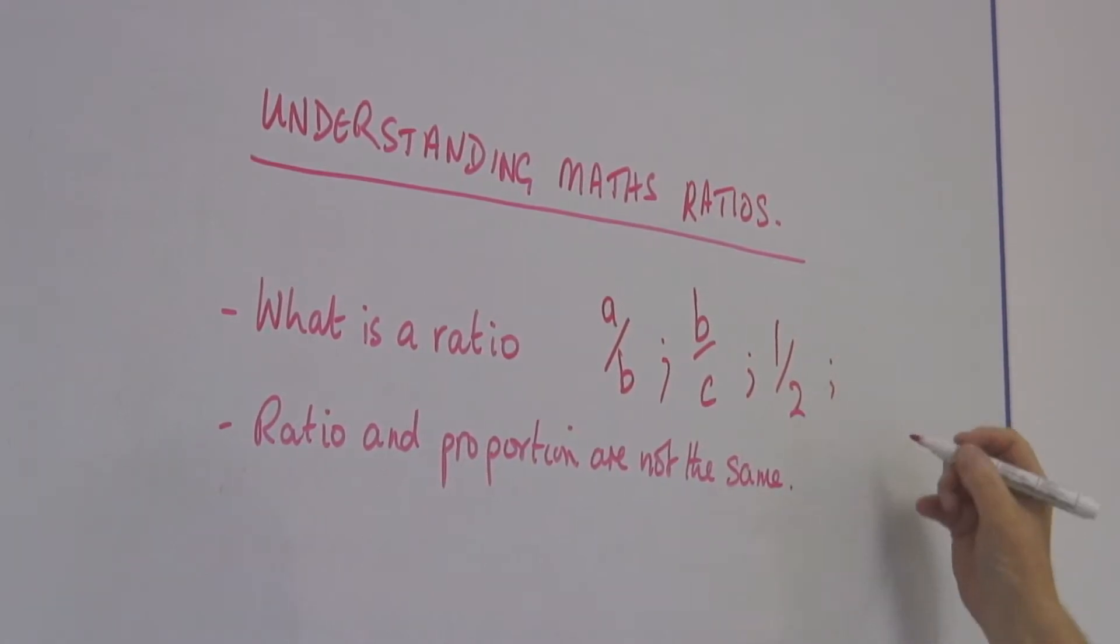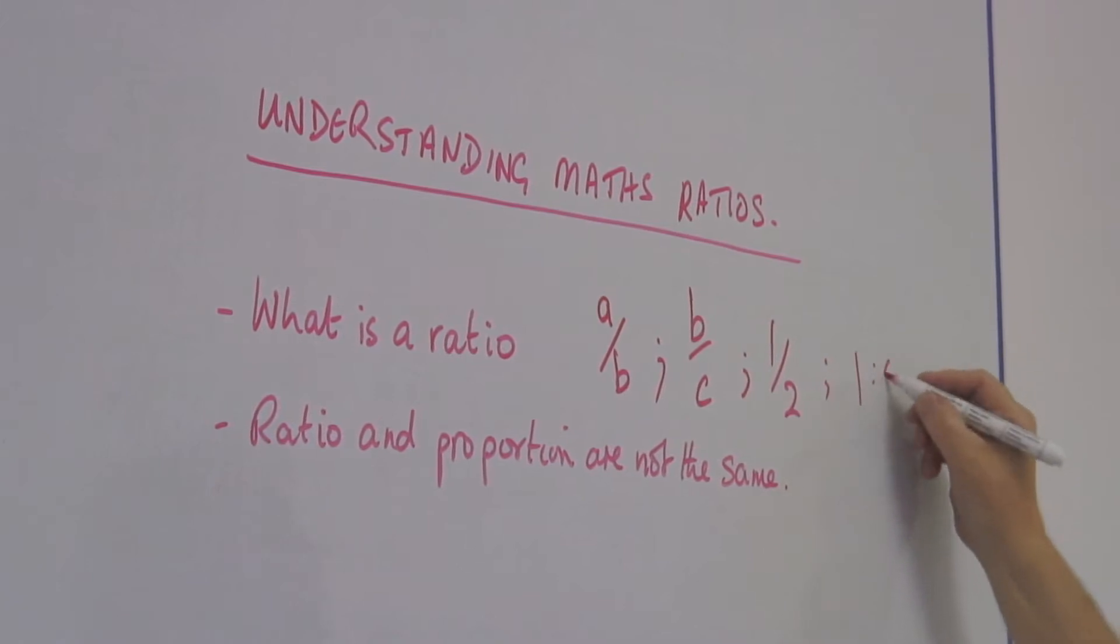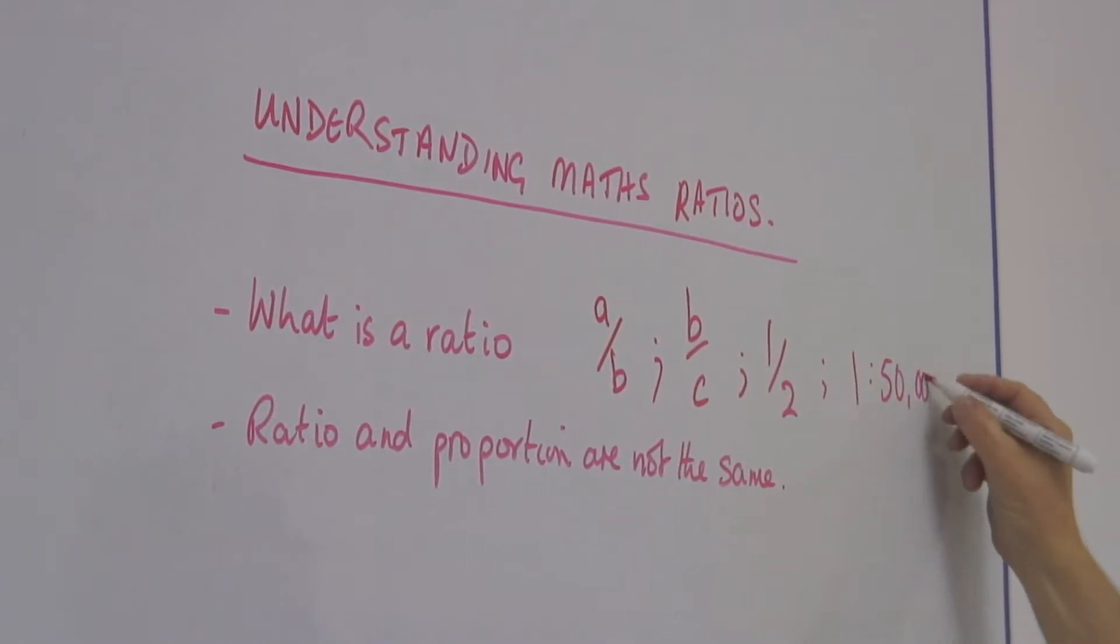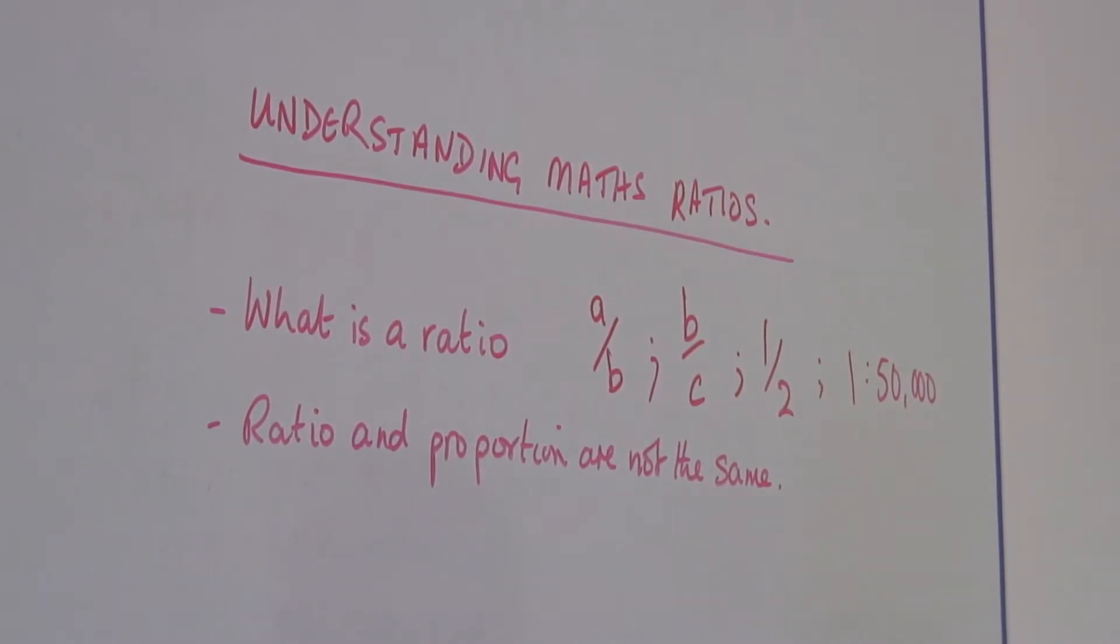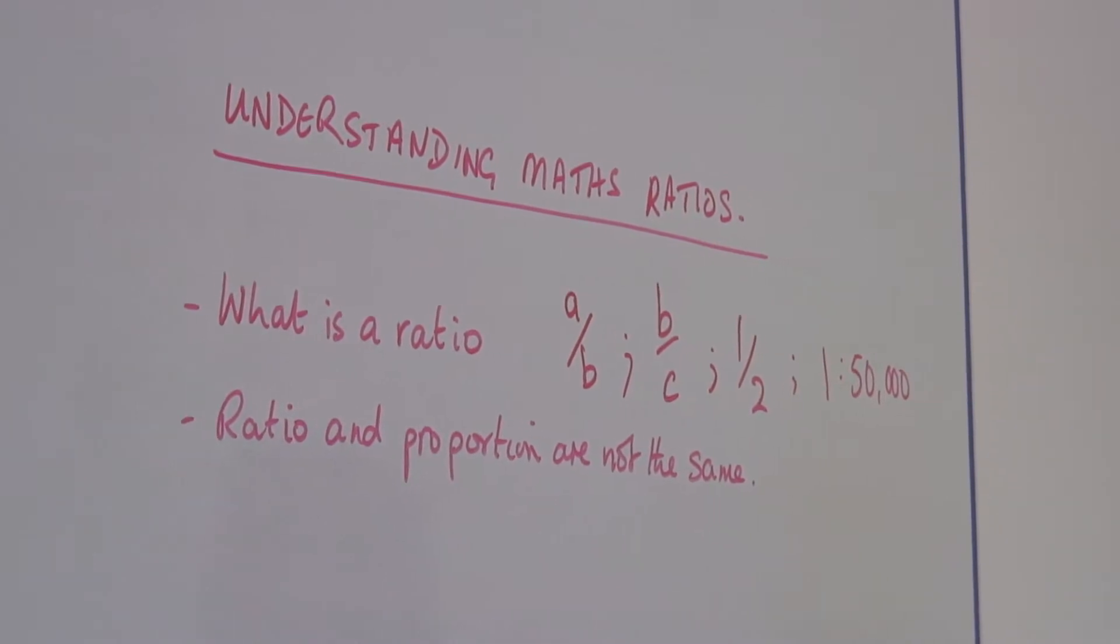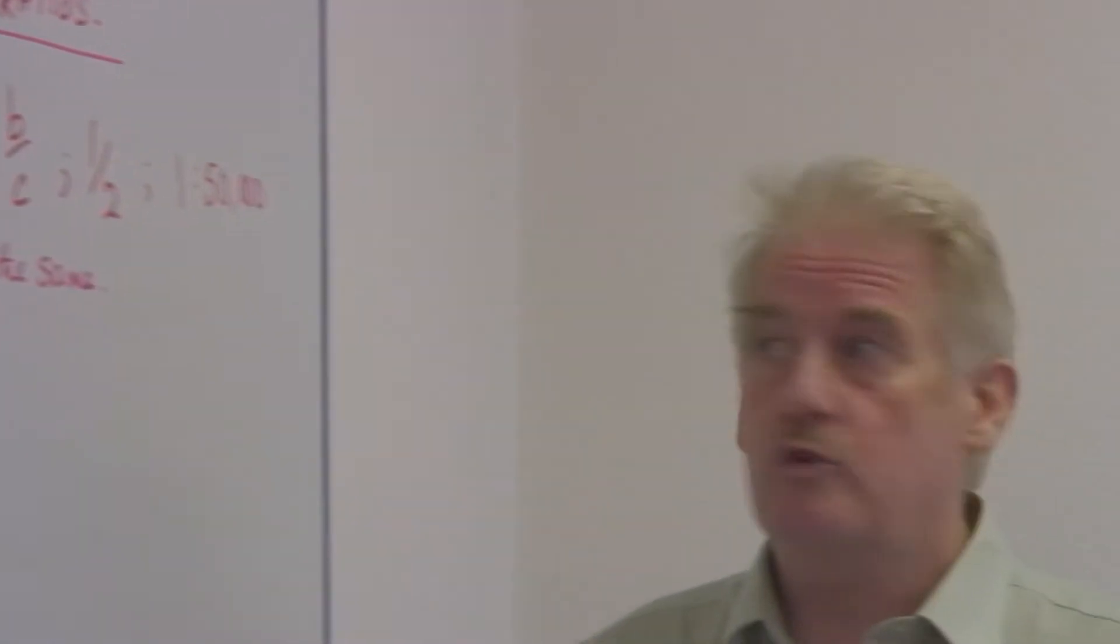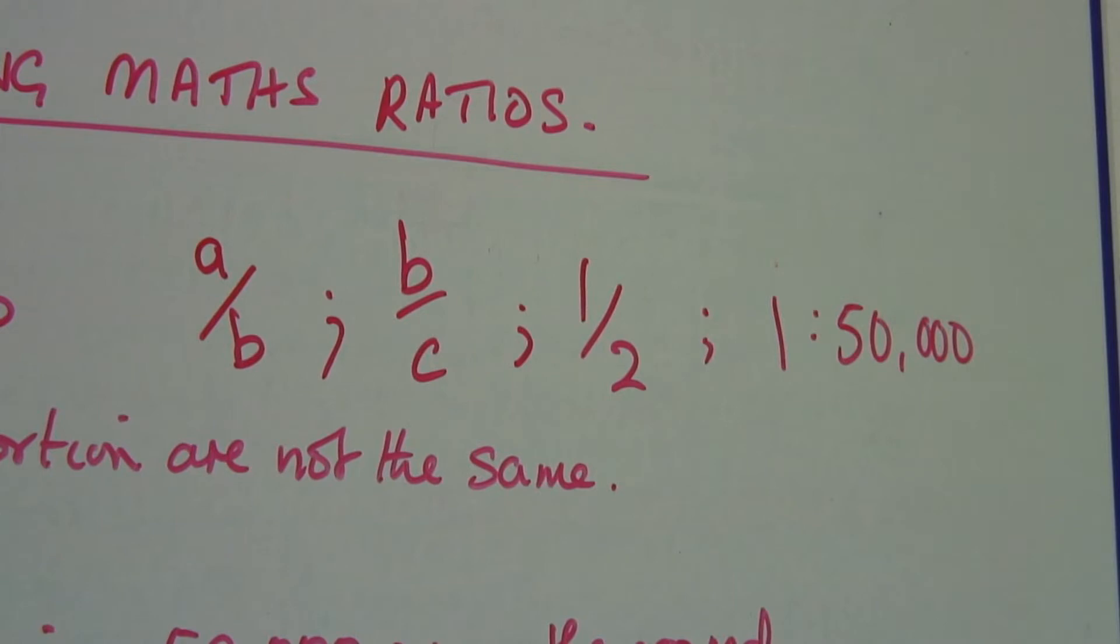Sometimes they are written 1 to 50,000. If you're looking at a map, for example, you'll see a ratio 1 to 50,000. That means the map is 50,000 times smaller than the actual land it's portraying. So that is what a ratio is.